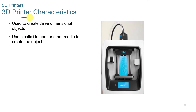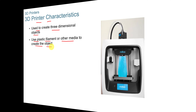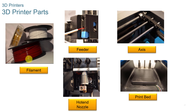When we look at 3D printer characteristics, they're used to create three-dimensional objects using plastic filament or other media. They come with filament spools. Components include your feeder tray or feeder rollers, your axis, your print bed, and your hot end nozzle.